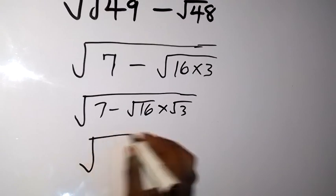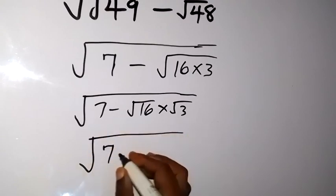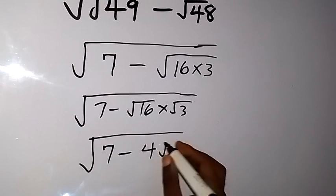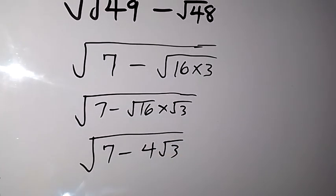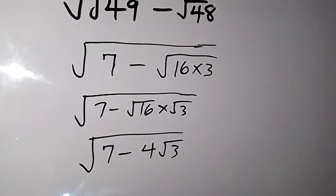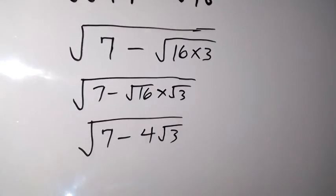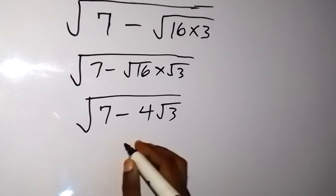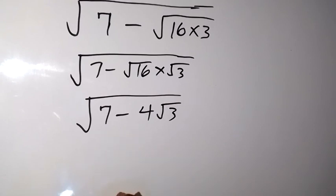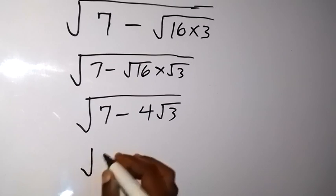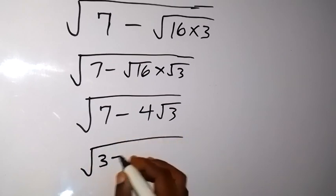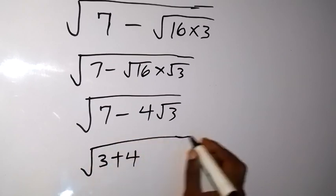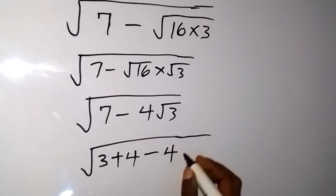root 7 minus 4 root 3. And we want to use something here now, like we break this 7 into 3 plus 4, so we now have root 3 plus 4, then minus 4 root 3.